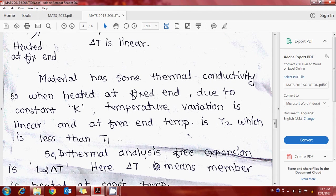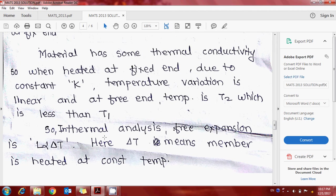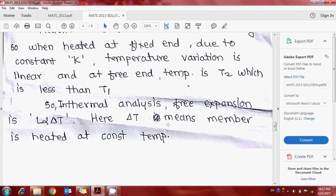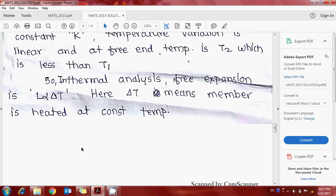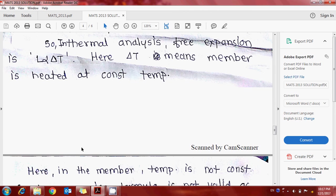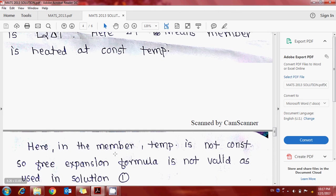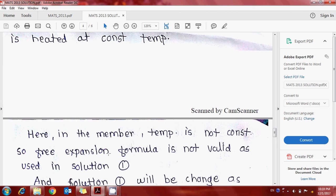Now suppose the material has some thermal conductivity. When heated at the fixed end, due to constant thermal conductivity, temperature variation is linear and the free end temperature T2 is less than T1. In thermal analysis, the free expansion alpha L delta T formula is used, but here delta T...